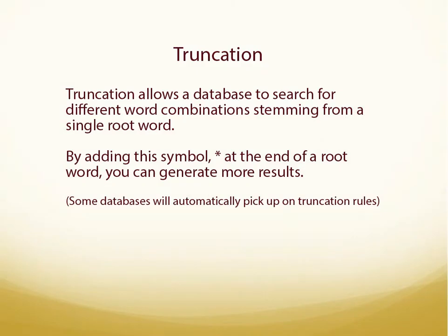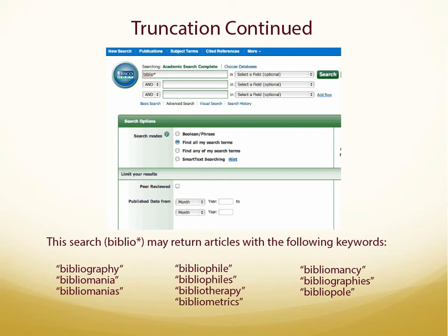Truncation is an easy tool you can use when your search is too narrow and you need to find more results. By placing an asterisk at the end of a root word, the database searches for that root word in addition to every other word combination. A search for the root word Biblio followed by an asterisk will produce articles using the following words.